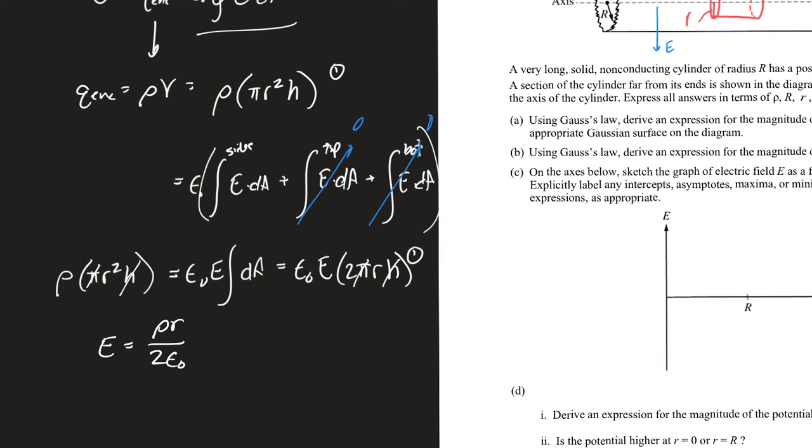To get that fifth point, you have to solve for the electric field. Bringing down rho pi R squared H, doing a little bit of math, we can cancel out the pi, cancel out the H. I'm going to get the electric field is equal to rho R over 2 epsilon naught. Now it's linear with R. This is not unexpected. We've seen this before, both inside a sphere and inside a cylinder. I'm not surprised by this. We've done this problem before. Last point, five points just for that.